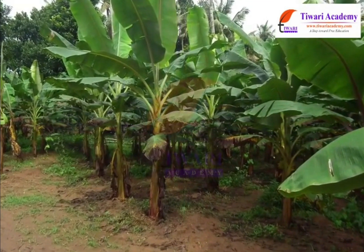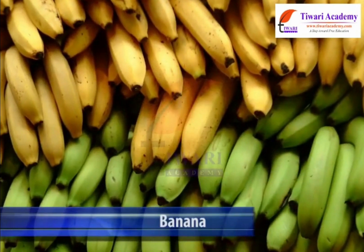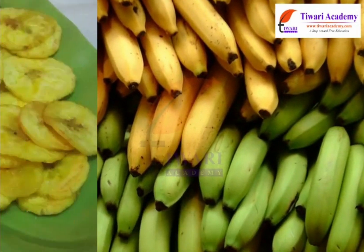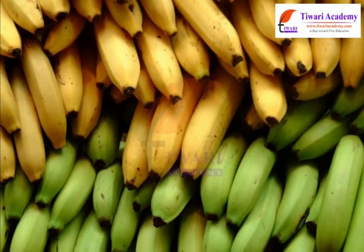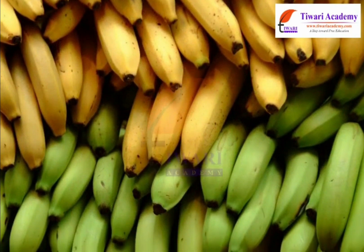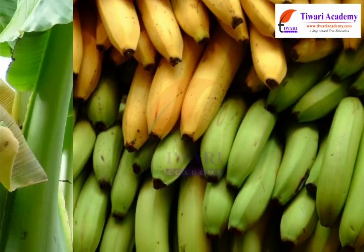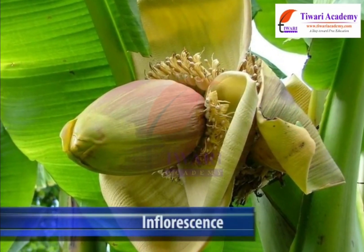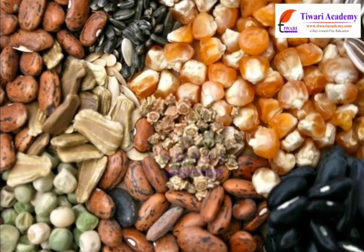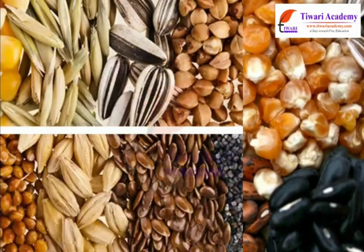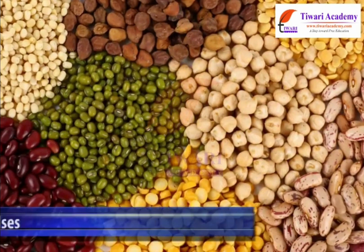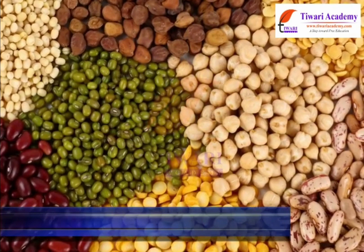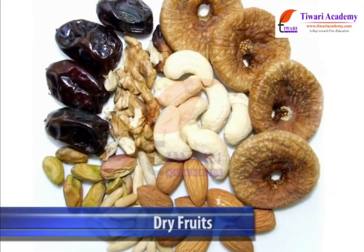Some plants give us more than one product. Like we eat banana fruit, make vegetables and chips from raw banana and we also prepare vegetables from the inflorescence of banana. We eat seeds of many plants as cereals, pulses and dry fruits.